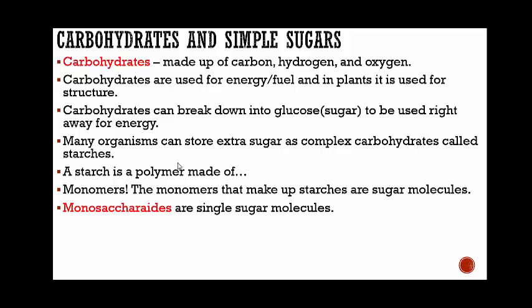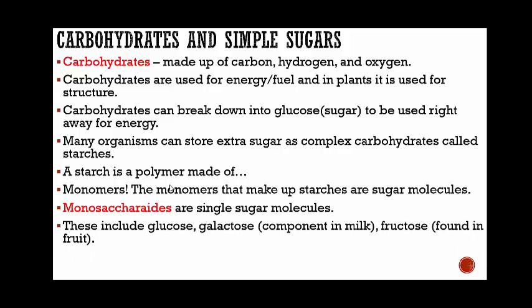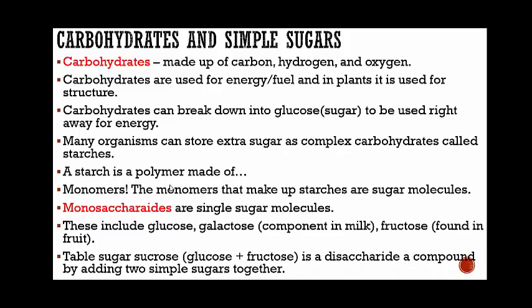Monosaccharides are single sugar molecules — saccharide meaning sugar, mono meaning one. These include glucose, galactose (which is a component in milk), and fructose (which is found in fruit). Table sugar, called sucrose, which is glucose and fructose combined together, is a disaccharide — saccharide meaning sugar, di meaning two.